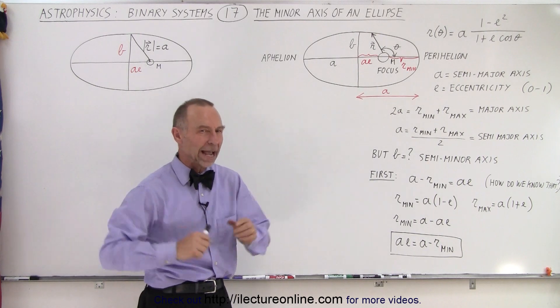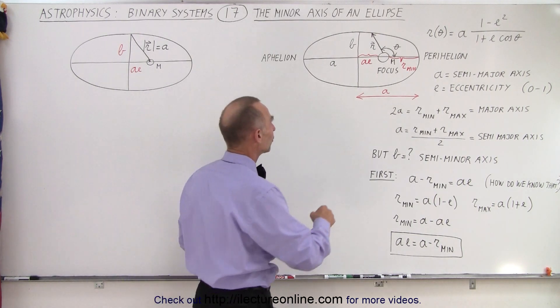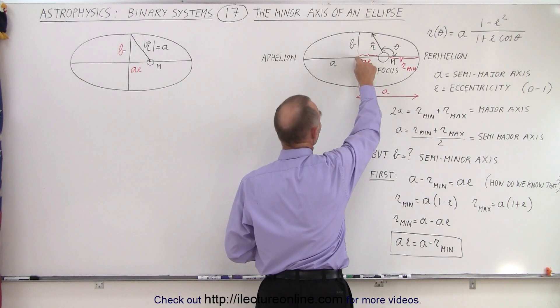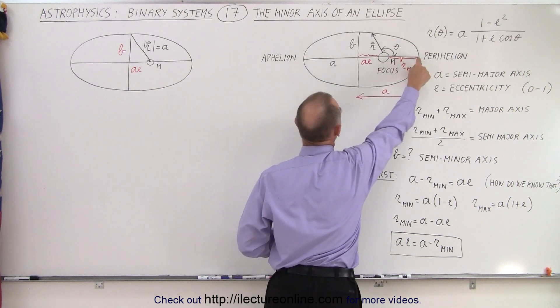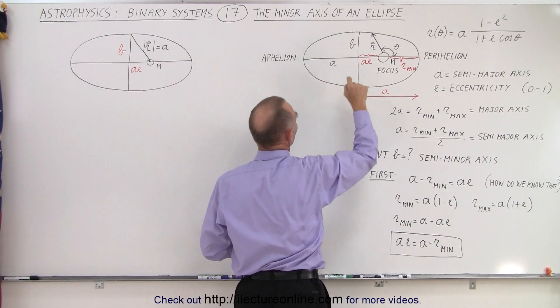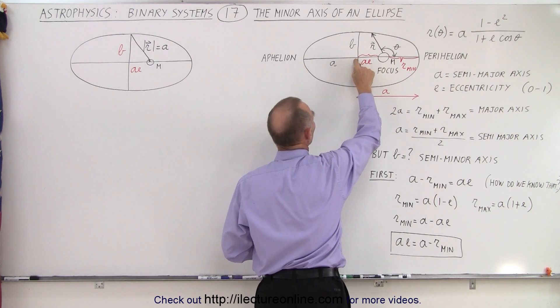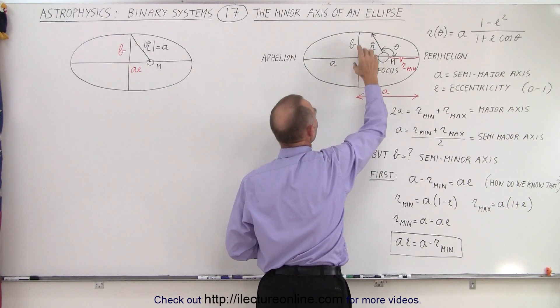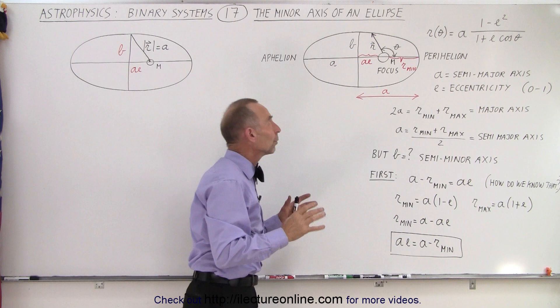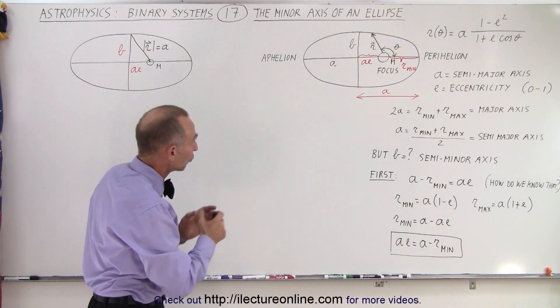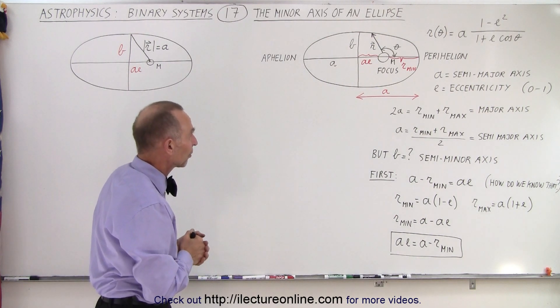We just covered the major axis of the ellipse. Notice the distance from the center of the ellipse to the point farthest away is called the semi-major axis, and the distance from the center of the ellipse to the point that's closest is called the minor axis, or in this case, the semi-minor axis of the ellipse.